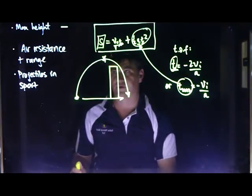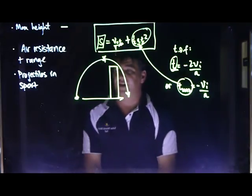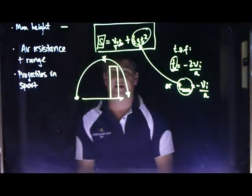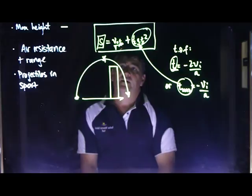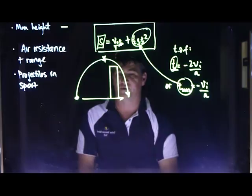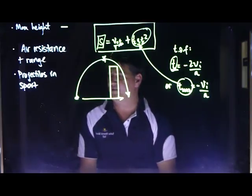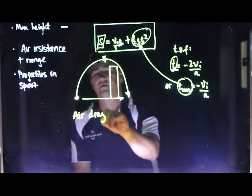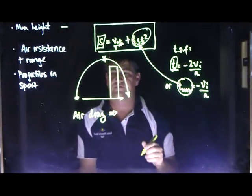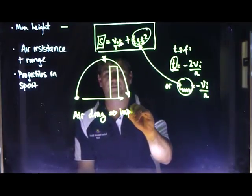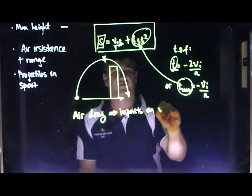The next thing that I want to talk about is air resistance and the range of a projectile. Well, there's really no formulas that we can use to work this out. It's basically just a conceptual understanding. So air resistance, air drag, is any sort of resistance that affects velocity at all, so impacts on velocity.